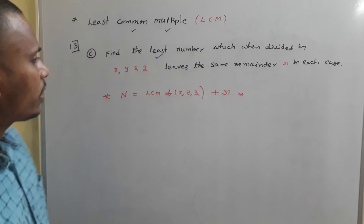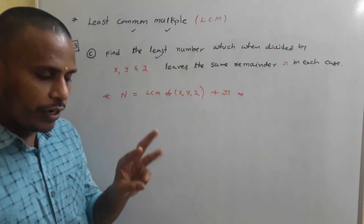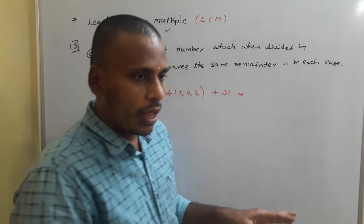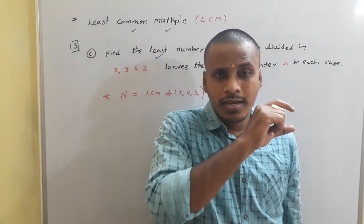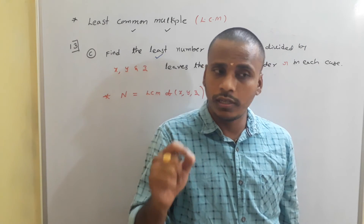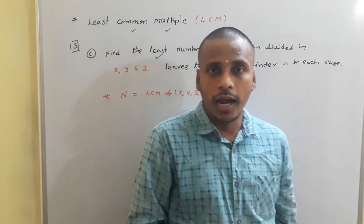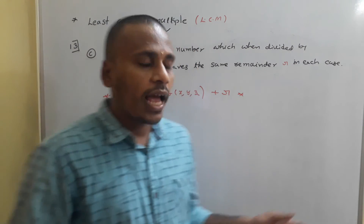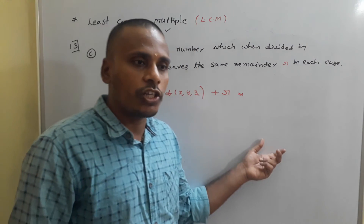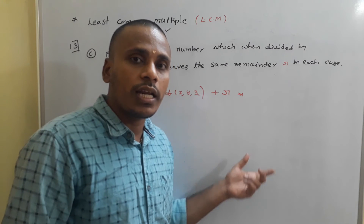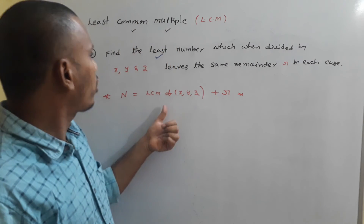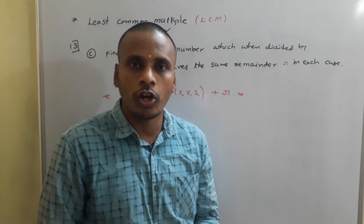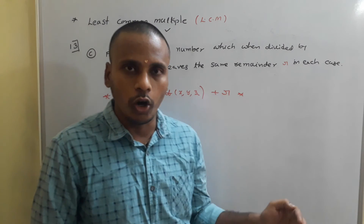So we have done three standard problems — 13a, 13b, and 13c — related to LCM. You need to analyze the question every time. To generalize these three problems, I gave division representations, and from those we generated shortcut rules. Memorize the shortcut rules for 13a, 13b, and 13c.